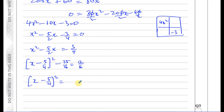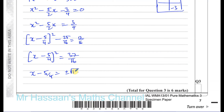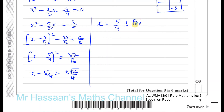Taking the square root of both sides: x minus 5 over 4 equals plus or minus the square root of 37 over 4, since the square root of 16 is 4. Therefore x equals 5 over 4 plus or minus root 37 over 4, which we write with a common denominator as x equals (5 plus root 37) over 4 or x equals (5 minus root 37) over 4.